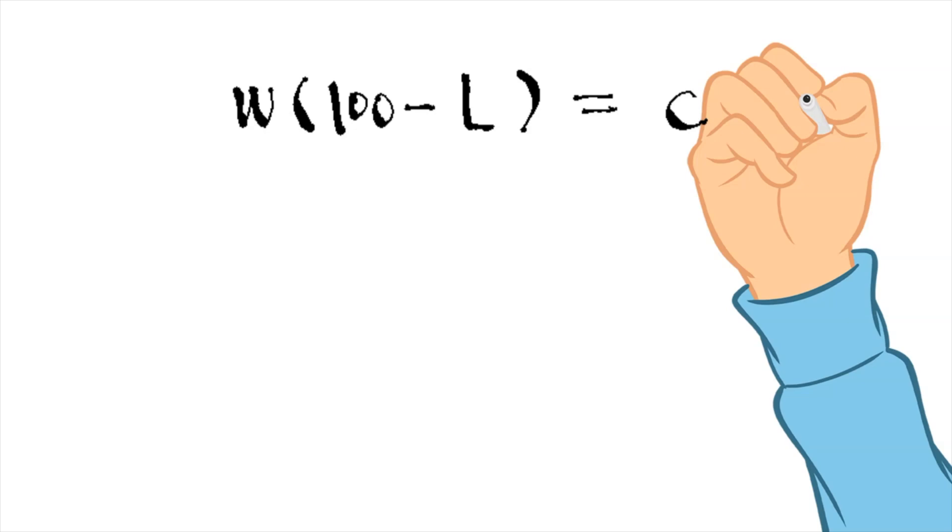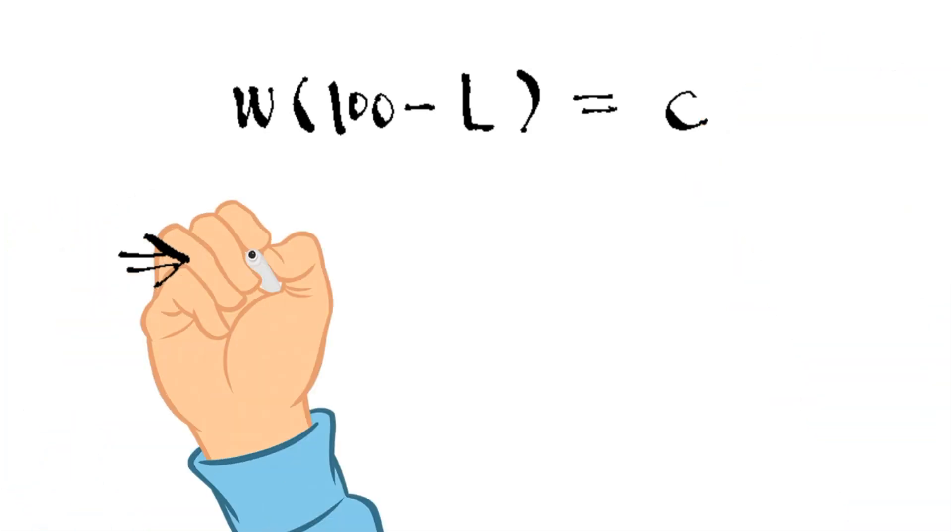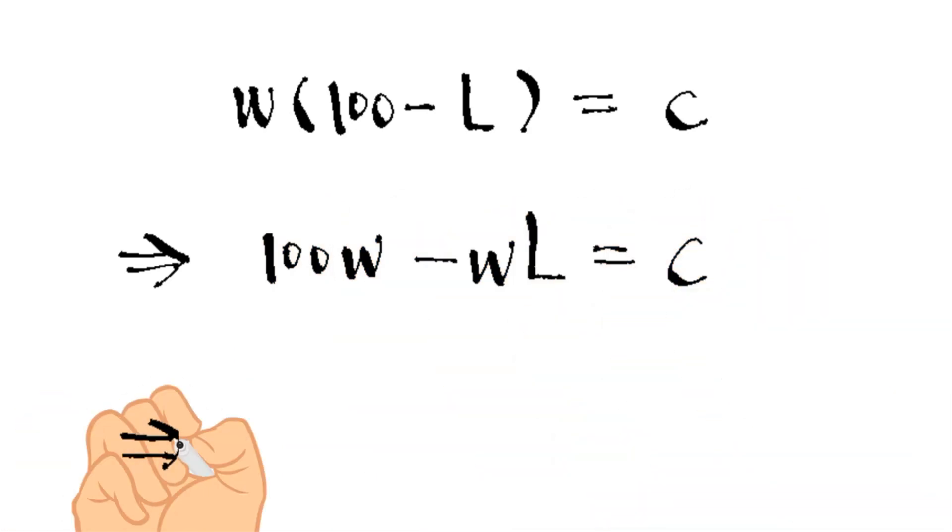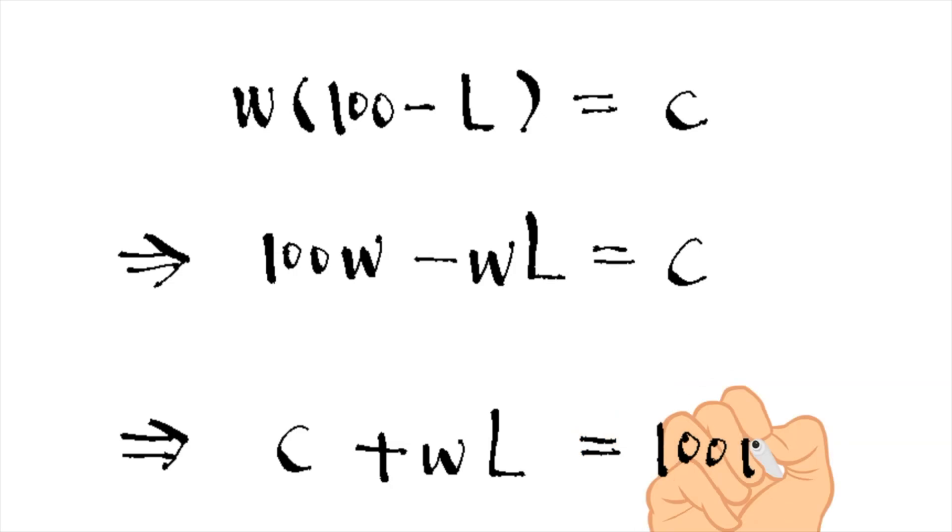We rearrange the equation and express it as C plus W times L equals 100 times W. It is the standard form of a budget constraint function. The price of consumption goods times the quantity of consumption goods plus the price of leisure times the hours of leisure equals the total income if she spends all her time working.